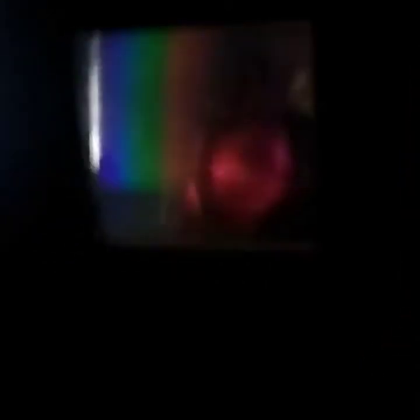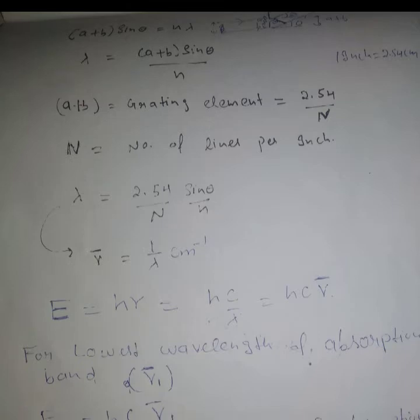Take the difference between the reading of the right side V1 scale and the left side V1 scale to get 2θ, where θ is the diffracting angle. Put the value of θ into the diffraction grating equation for the first order to find the wavelength of the absorption line.